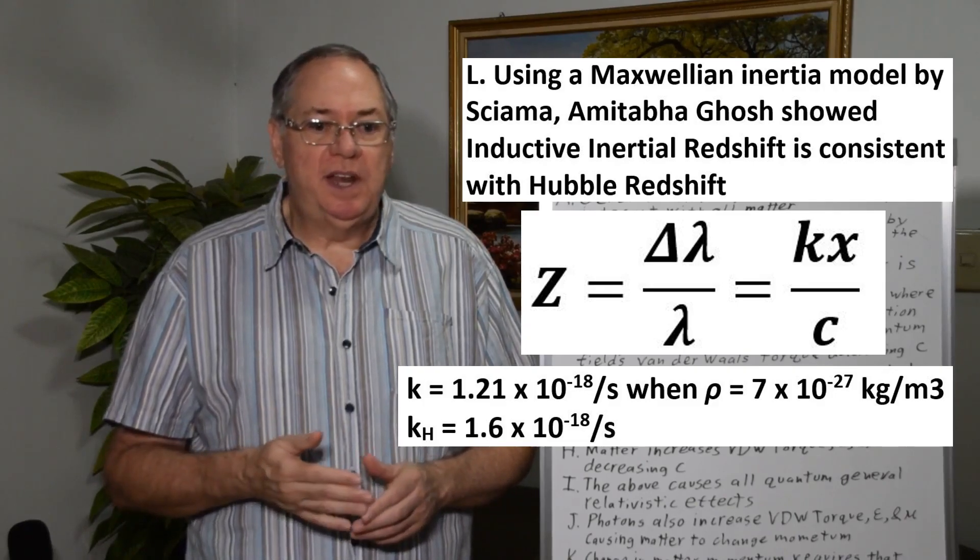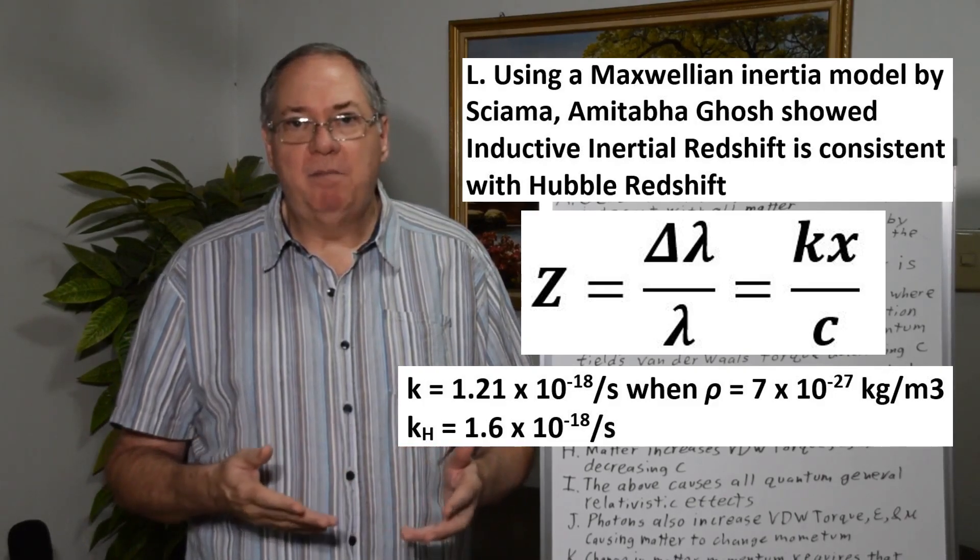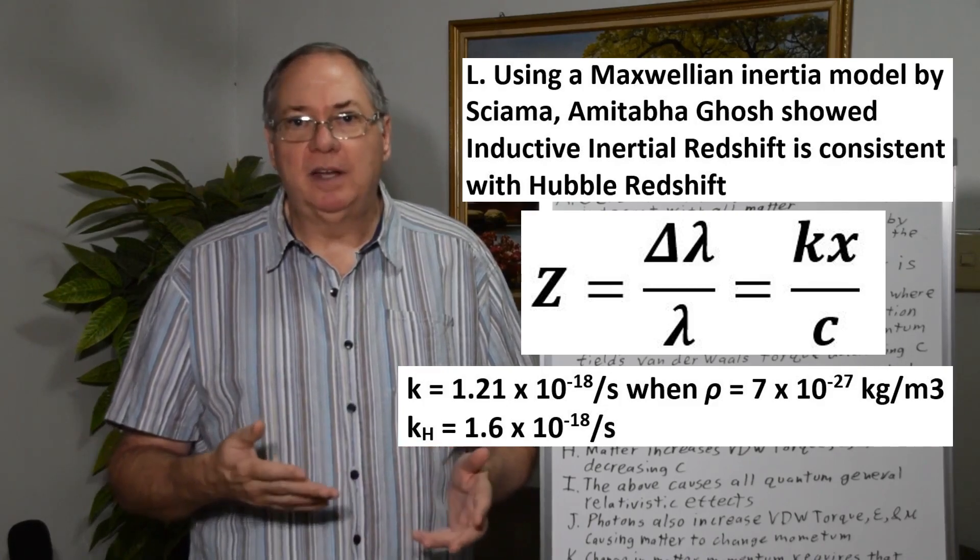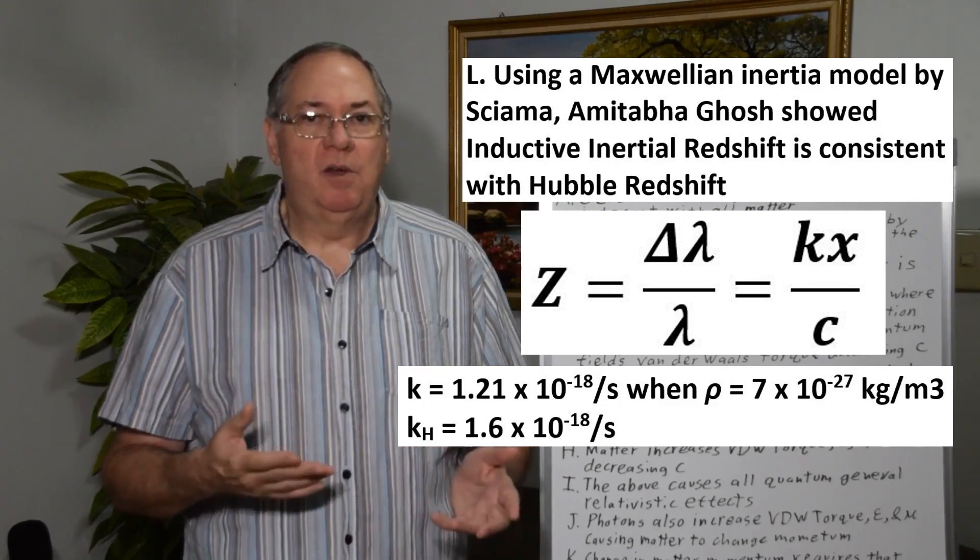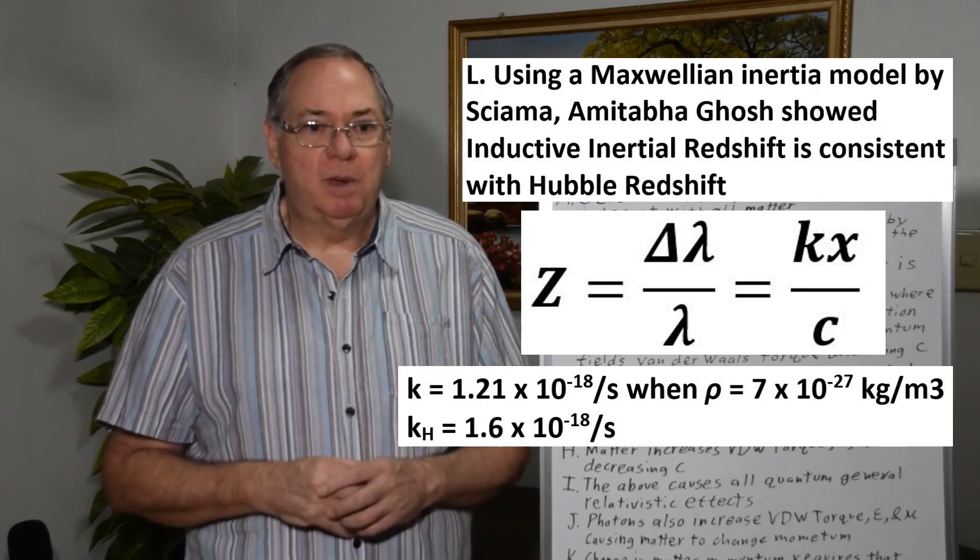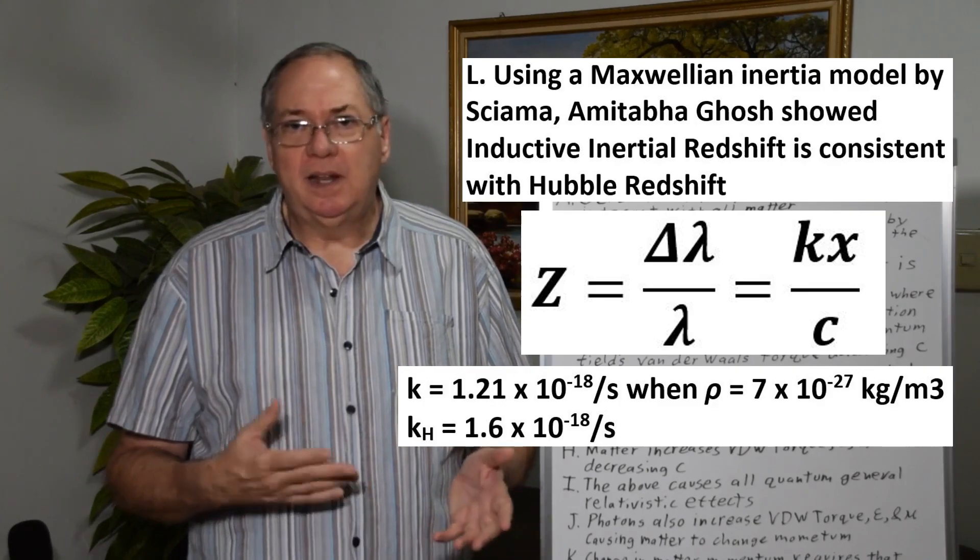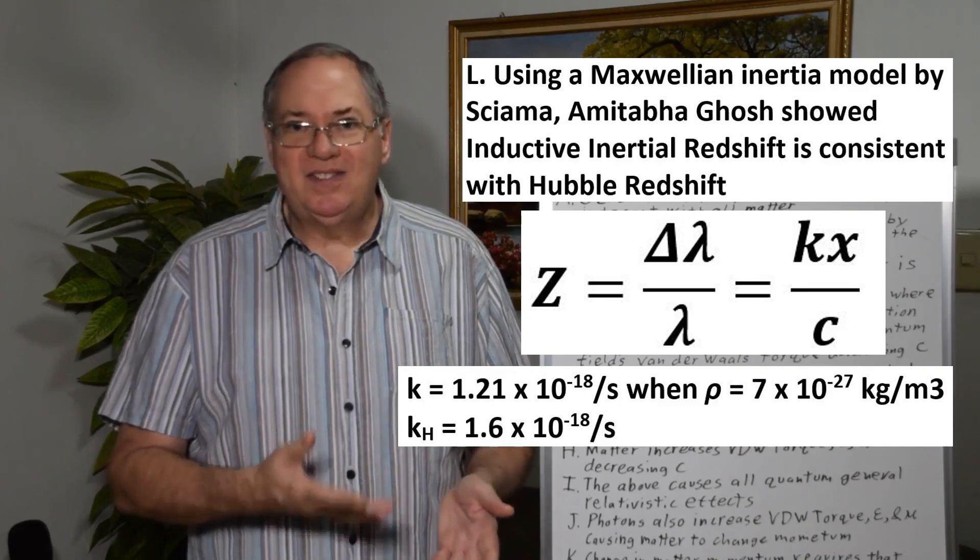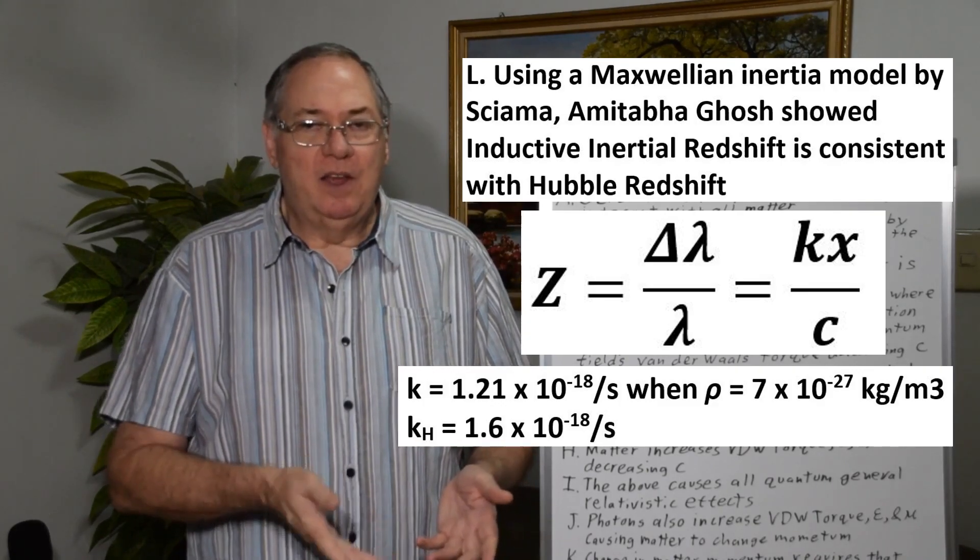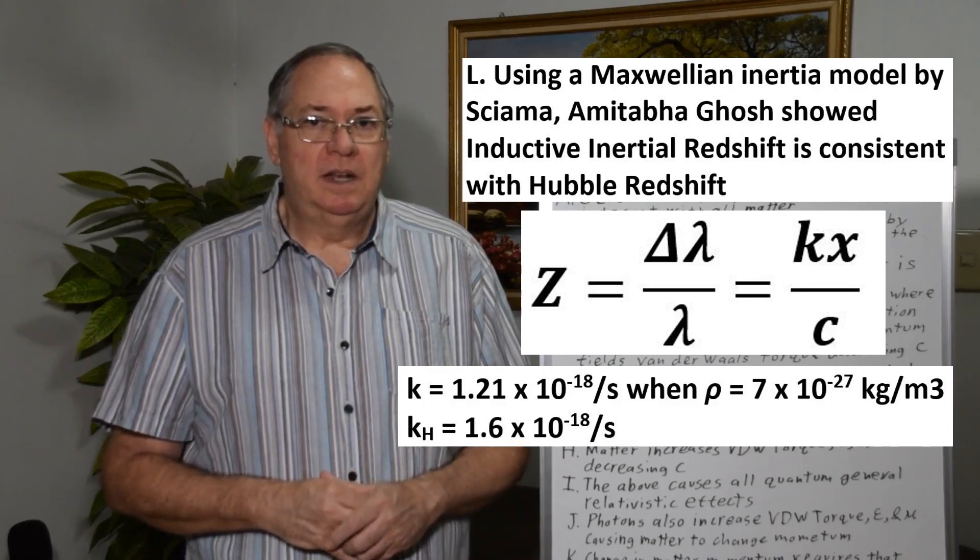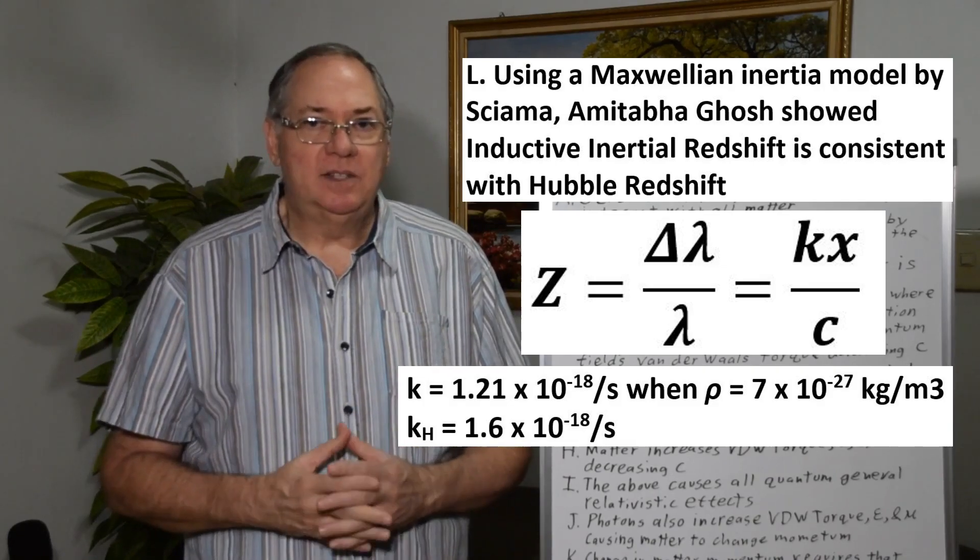And Ghosh used an estimate of 7 times 10^-27 kilograms per meter cubed, a little over 4 protons per cubic meter. So if you use a density estimate that's slightly greater, you could get exactly the Hubble redshift constant K in this equation.